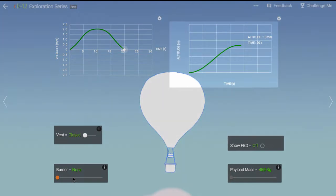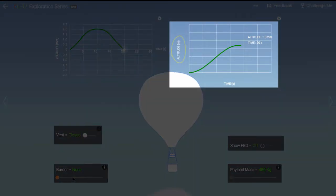The position graph at right shows how high above the ground the balloon is at different times. The position of the balloon can never be negative. That would be beneath the ground.